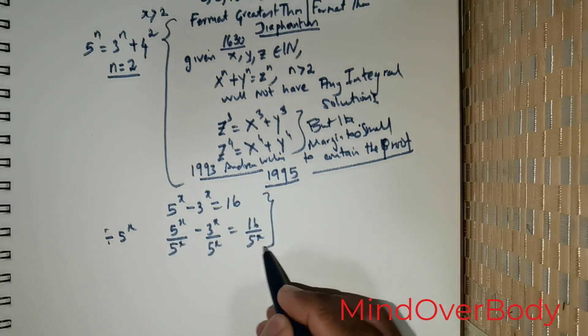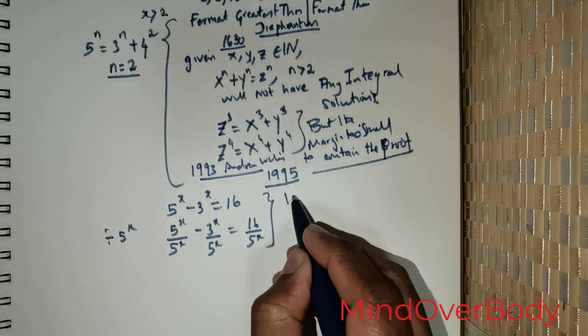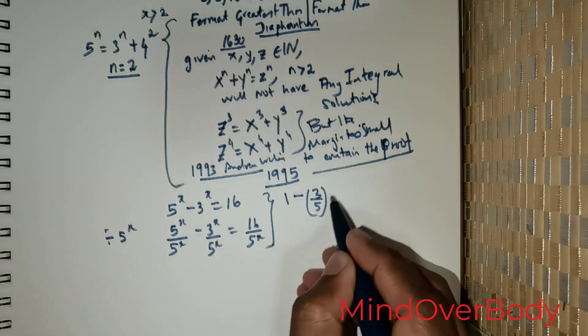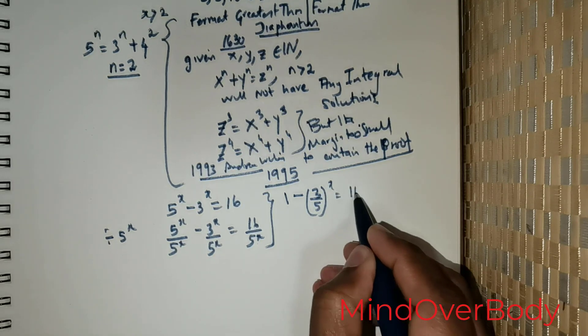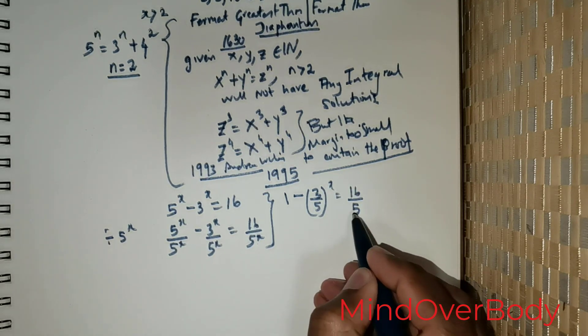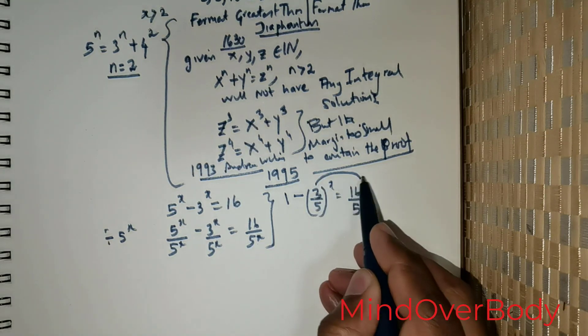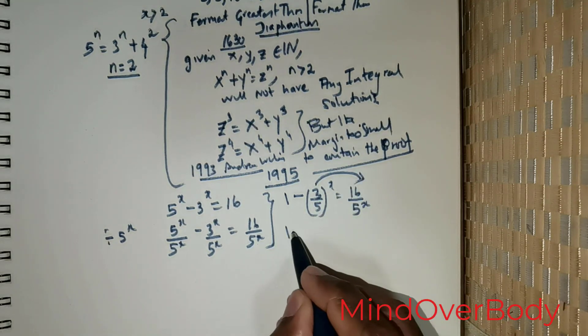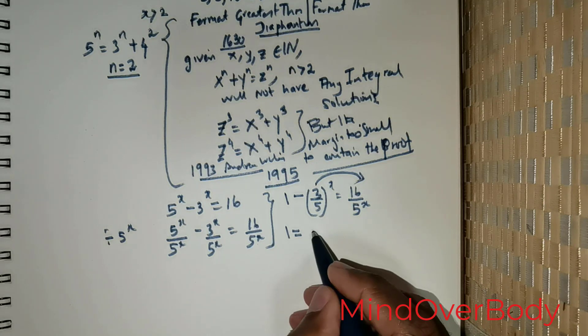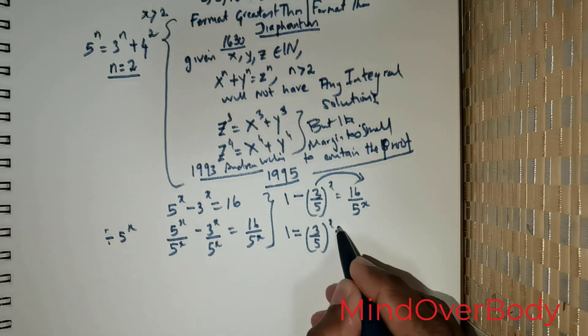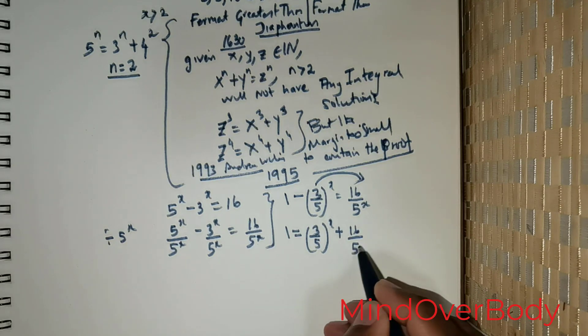I would want to move this to the right side, so I would have on the left-hand side: 1 = (3/5)^x + 16/5^x.